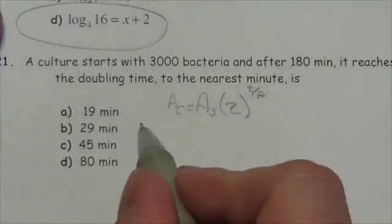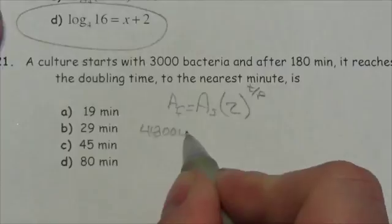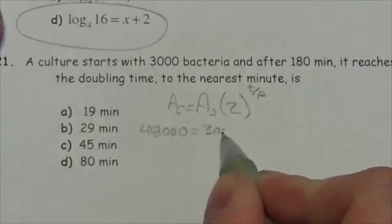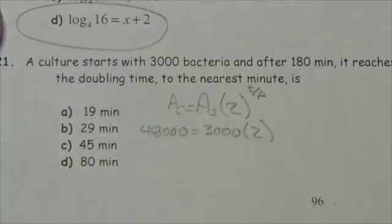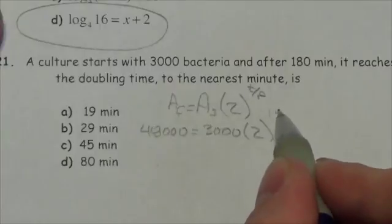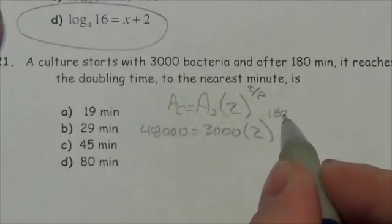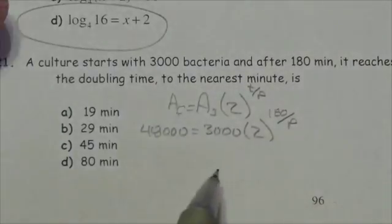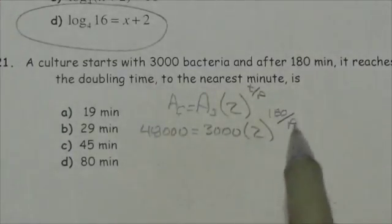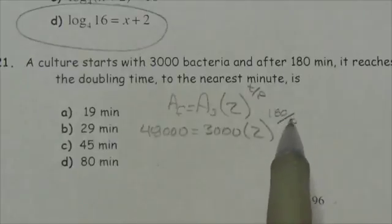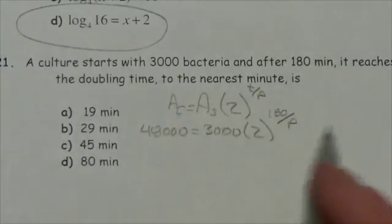We ended up with 48,000 and started with 3,000. It took 180 minutes and we're looking for p, the period. My goal is to solve for p, which is in the denominator of the exponent.